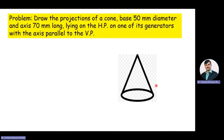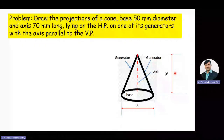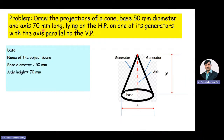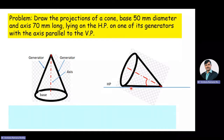This is a cone. These lines are called generators. This is the axis of the cone and this is the base. The diameter of the base is 50 mm and axis height is 70 mm. The name of the object is cone, base diameter is 50 mm, axis height is 70 mm, and the cone is resting on one of its generators on the HP and axis is parallel to the VP. Since the cone is lying on the HP on one of its generators, that generator is on the HP, which means the cone's axis is inclined to the HP.